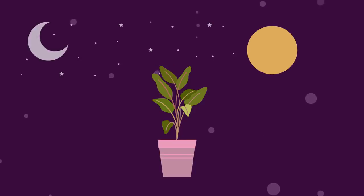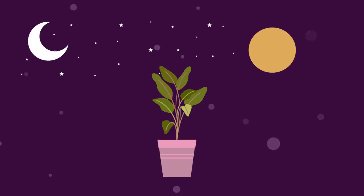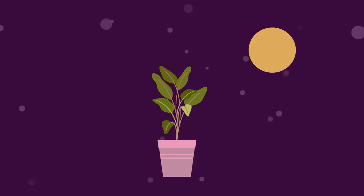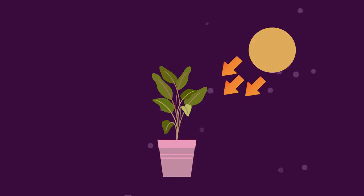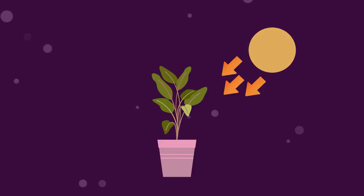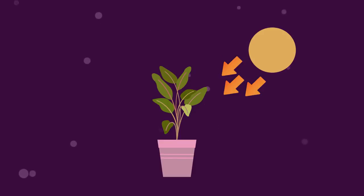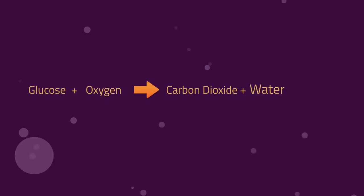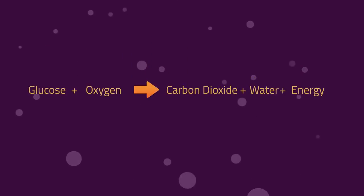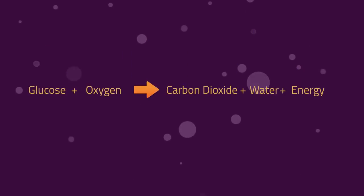Plants respire throughout the day and night, as do animals. But they only photosynthesize during the day, when there is light available. So this is how aerobic, or with-air, respiration works. You just need to remember that glucose is broken down in the presence of oxygen to release carbon dioxide, water, and energy.